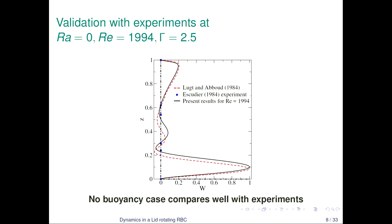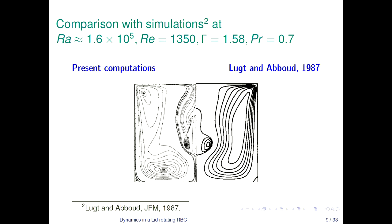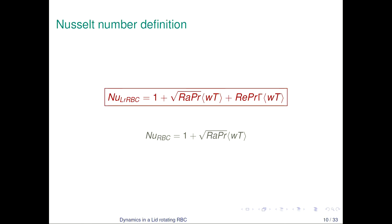We validate our code — one validation used is without any buoyancy force, since we did not find any experiments on lid-rotating RBC. Shutting off the buoyancy force, we could validate against the SQD experiments and our stagnation points match the SQD results without buoyancy. For lid-rotating RBC, the only available literature is numerical results by Lugt and Abboud in 1987. However, their computation is for an axisymmetric case while our code is a non-axisymmetric code, so the bottom stagnation point does not fully match.